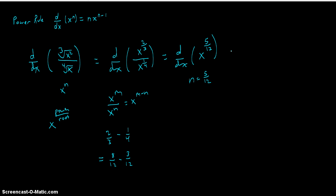And now we can use our power rule. The derivative is 5 twelfths times x to the power of 5 twelfths minus 1. So that's 5 twelfths times x to the power